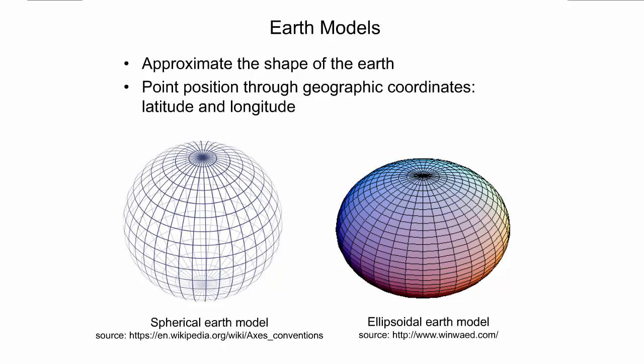To describe a point position in space that is above or below a spherical or ellipsoidal reference surface, a third parameter, height, is needed. Circles that pass through the north and south geographic pole on the spherical Earth model are called meridians. Likewise, ellipses that pass through the north and south geographic pole on the ellipsoidal Earth model are called meridians as well.